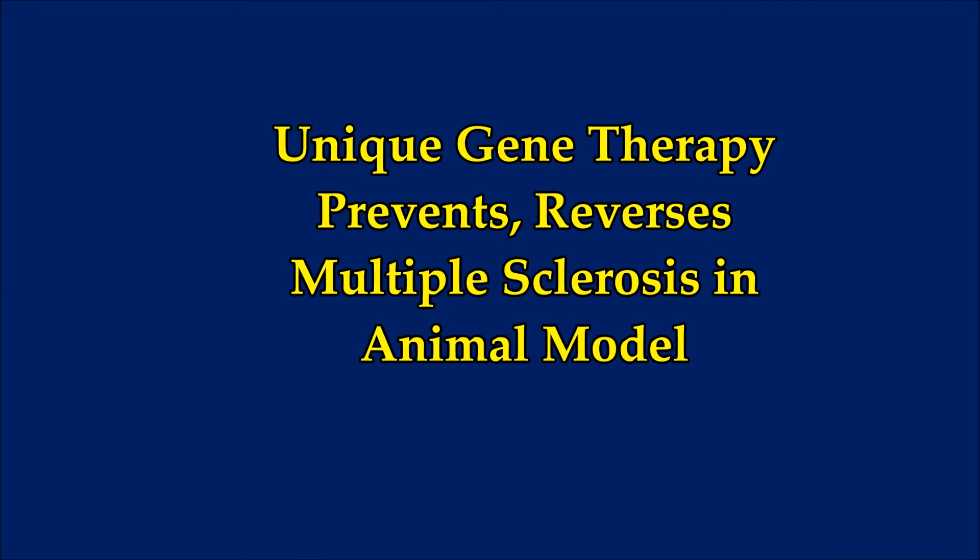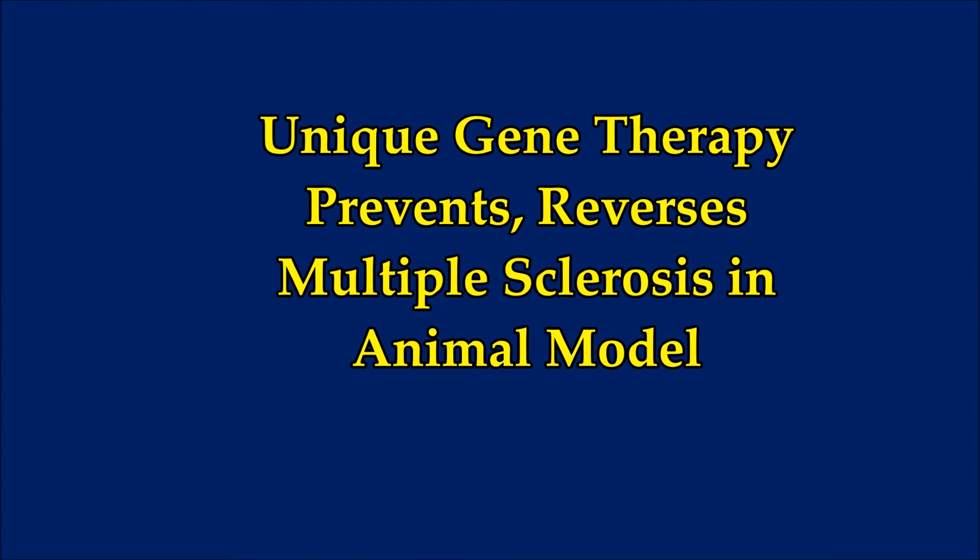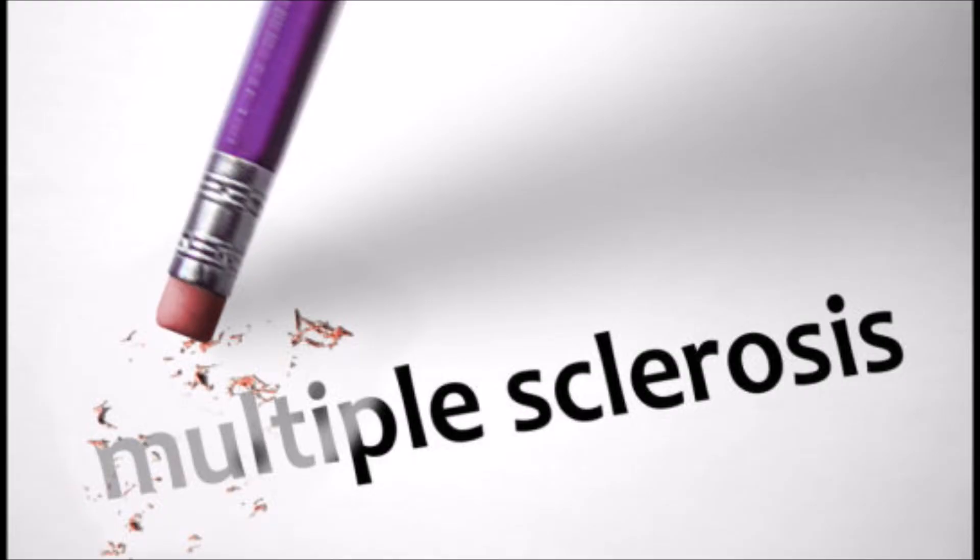Unique gene therapy prevents and reverses multiple sclerosis in animal model, September 27, 2017, University of Florida. Multiple sclerosis can be inhibited or reversed using a novel gene therapy technique that stops the disease's immune response in mouse models, researchers have found.